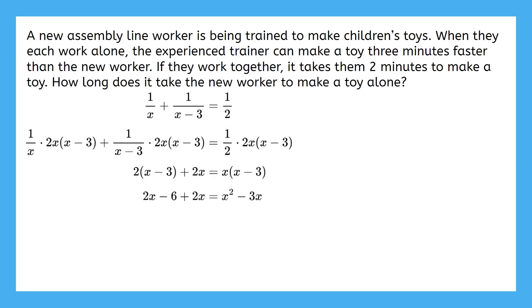Then distribute through the parentheses, combine like terms, and since we have an x squared term, we need to get this equal to zero in order to solve it. We want to keep the x squared term positive, so we move everything to the right. Once it's set equal to zero, we can rearrange the sides if we want to, and then factor, and solve.